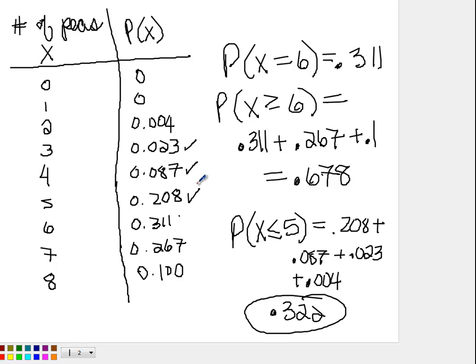Okay, if it says inclusive, for example, if it says what's the probability that you get between 3 and 5 peas? Inclusive, that means you have to include the 3, you have to include the 5. Alright, so this is how you read the probability distribution table. Hope this helps!